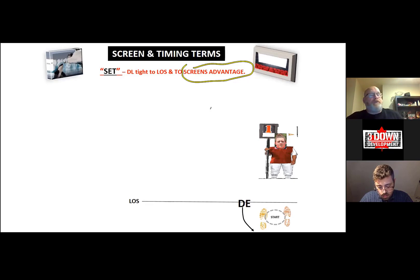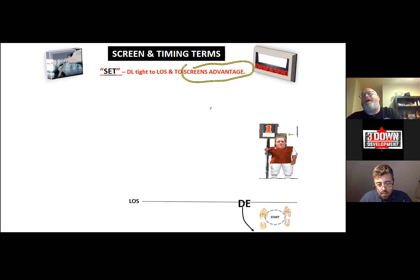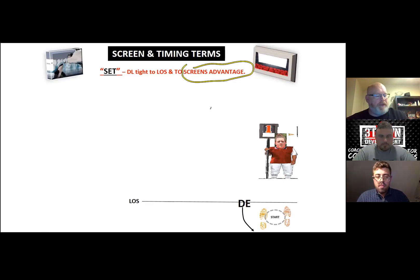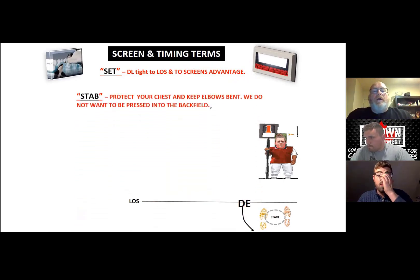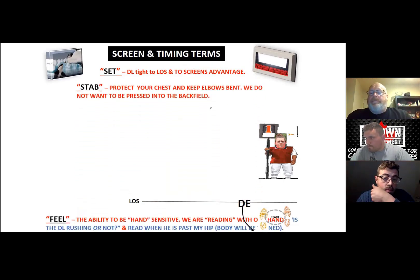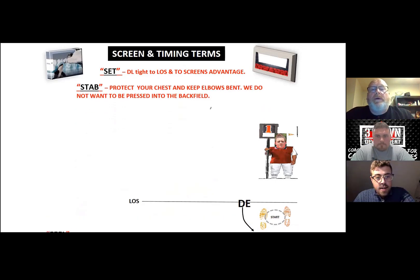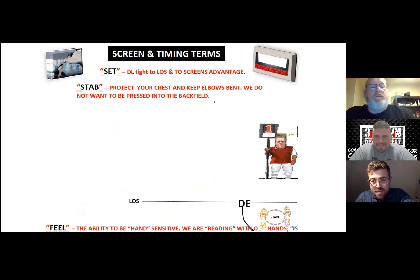If we're running a chip screen, the release will be really tight off the hip of our tackle. I want that guard to slightly overset and try to set advantageously to the screen. I'm going to have to roll a little bit because we've got some ground to cover.